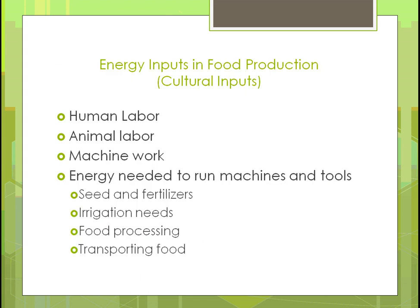There are many energy inputs for creating our food: human labor, animal labor, and a lot of machines. As farming has become more mechanized, energy is needed for those machines and tools, from seeds and fertilizers to irrigation. Then there's off-farm food processing, and after that, transportation to warehouses, grocery stores, and convenience stores for consumers.